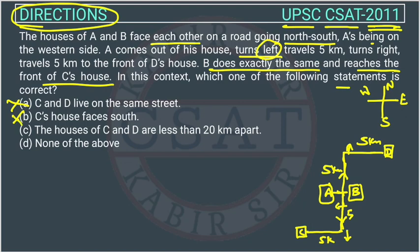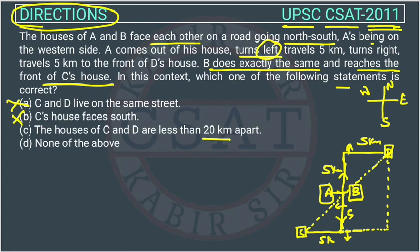The next statement: the houses of C and D are less than 20 km apart. So we have to check this distance. We will use the Pythagoras theorem — it's very easy, we read it in school. We need to find the distance C to D. Let's call the midpoint O, and find CO and OD, then apply the theorem.